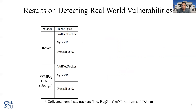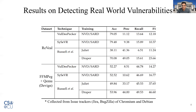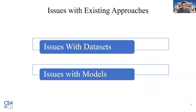With that, we evaluated the existing vulnerability detection techniques on two real-world vulnerability datasets. Among these two datasets, we collected real-world data from the issue trackers of Chromium and Debian projects. The performance of these approaches in these two datasets is far from being effectively and reliably used in a development pipeline. We have identified two major sources of problems to explain these results, and in the rest of the talk we are going to discuss these problems.